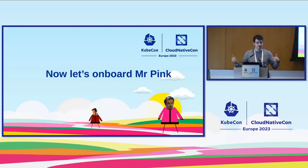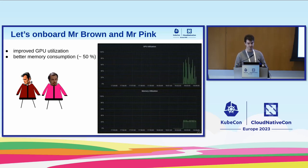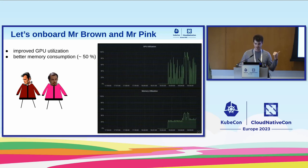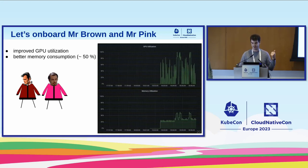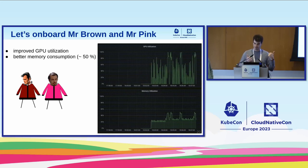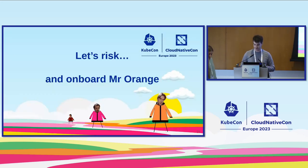Now we can onboard Mr. Pink because we can share the GPU. Mr. Brown and Mr. Pink are going to run using time sharing. At some point Mr. Pink is randomly executing, and we can see better memory consumption and improved GPU utilization. We can still see we can take more advantage of this, so we're going to risk it and onboard our wildcard, Mr. Orange.